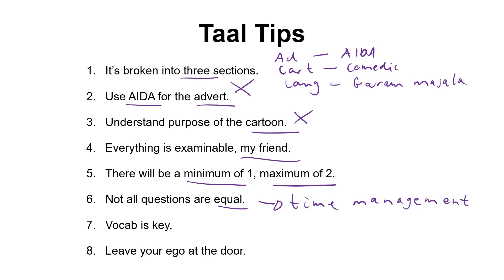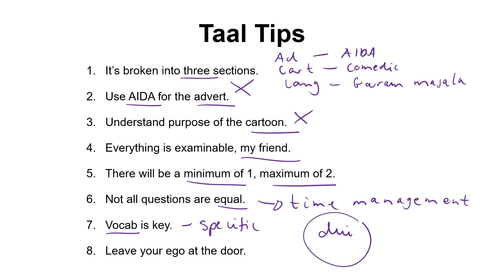If TAL is your stronger point, go for TAL - start with whatever you're good at. If you're killing the synonyms, you can nail 10 marks in 10 minutes, so start with that. Vocab is absolutely key. At this stage it's a little late to learn all the words in the Afrikaans language, but go through some past papers and do specific preparation. Look at the question words - for example, 'dui aan' means indicate, and 'lei af' means derive. These appear a lot.